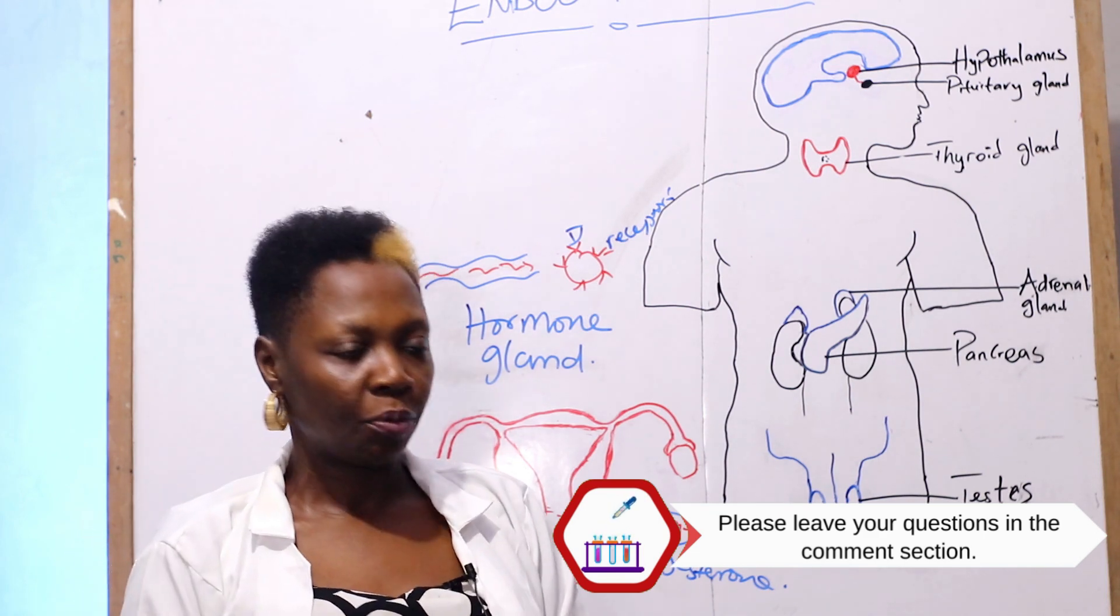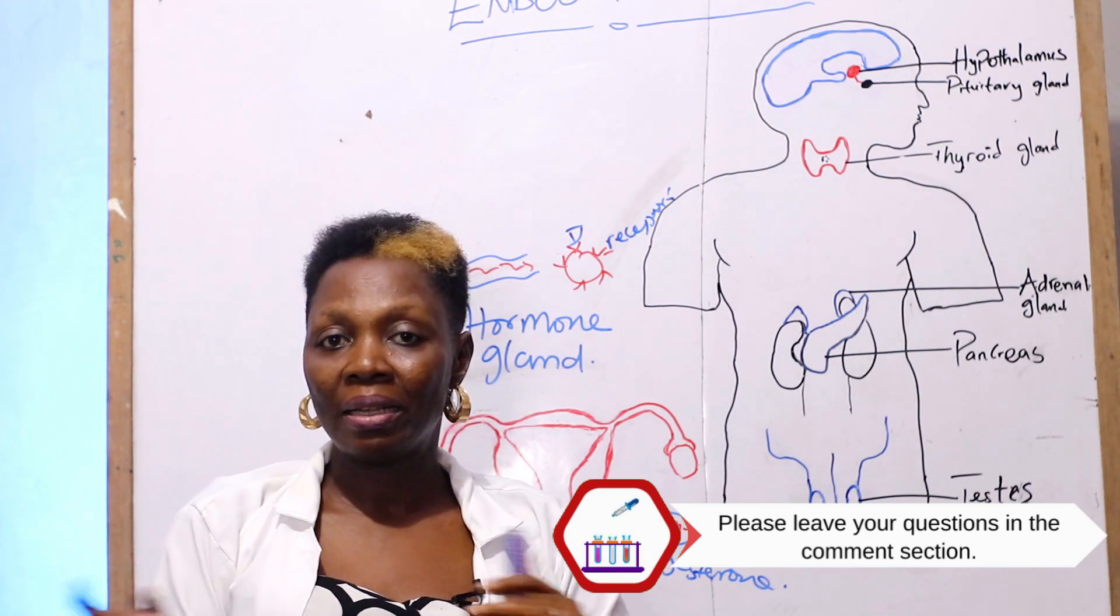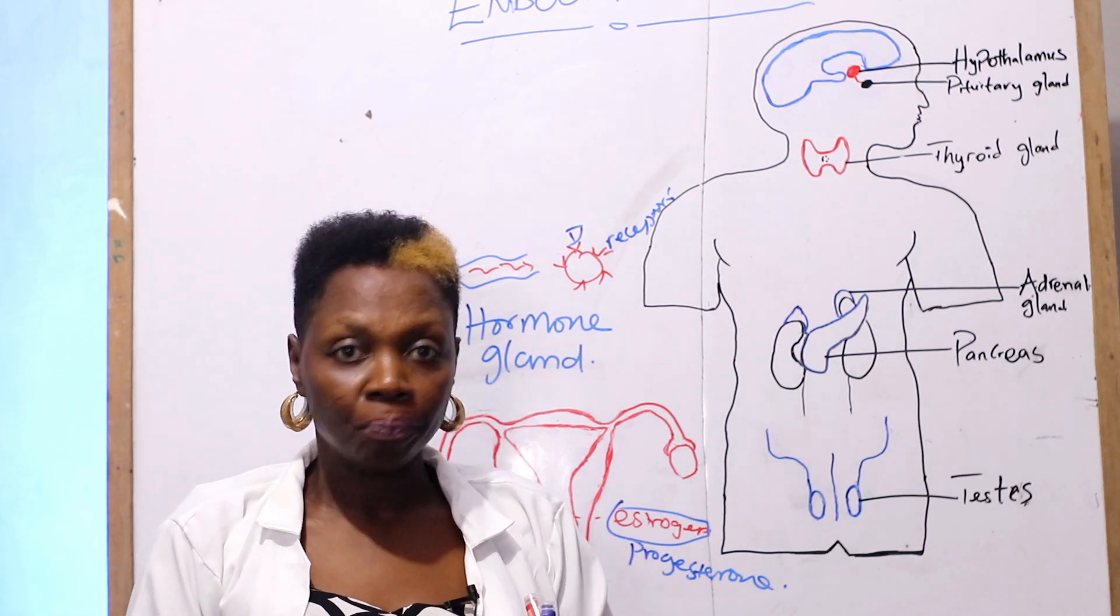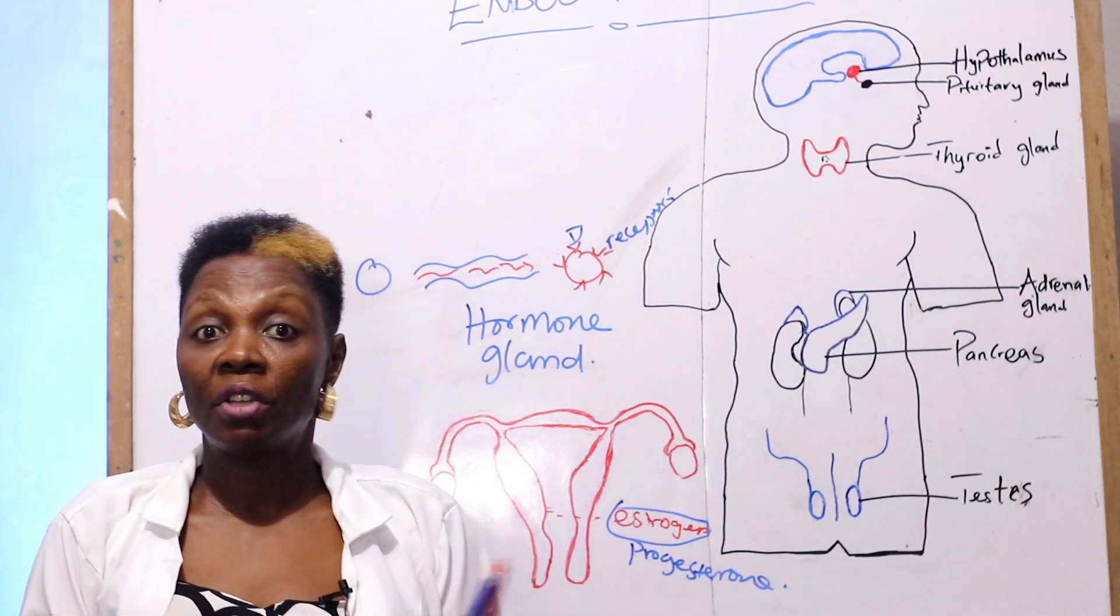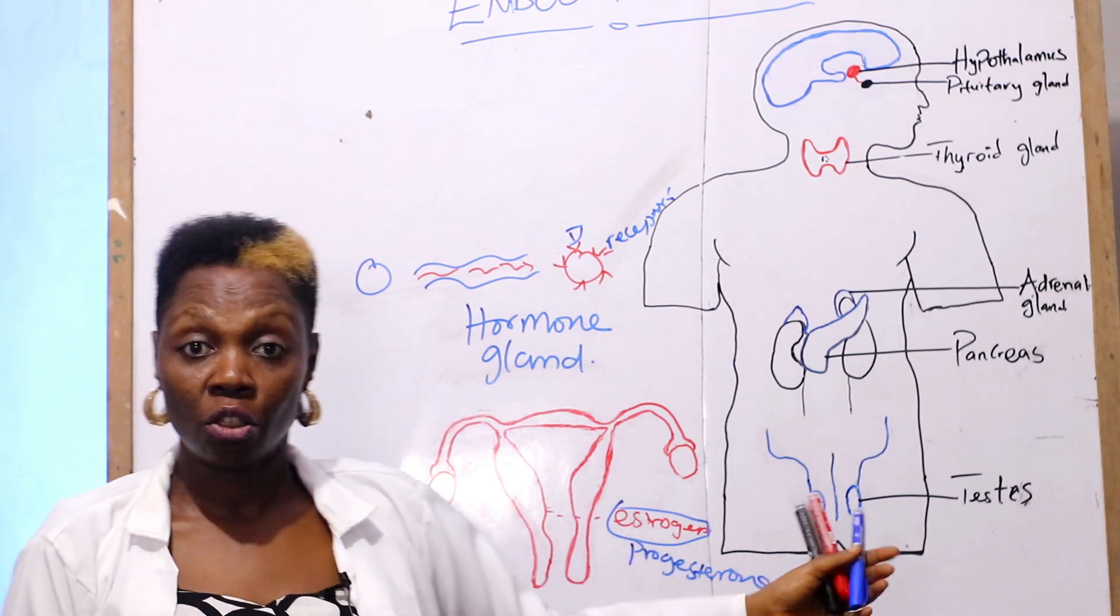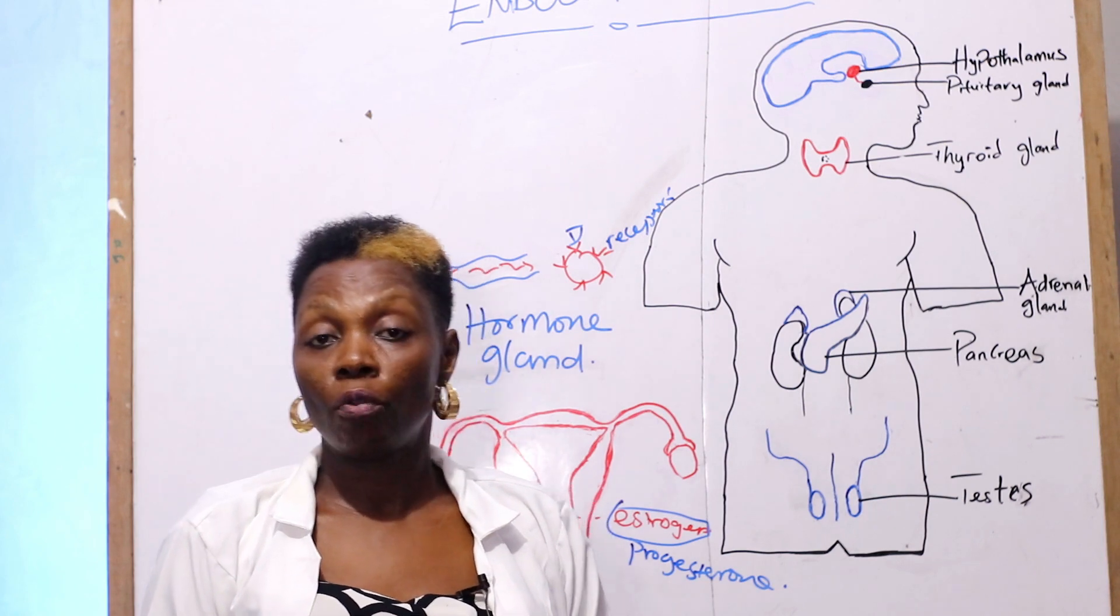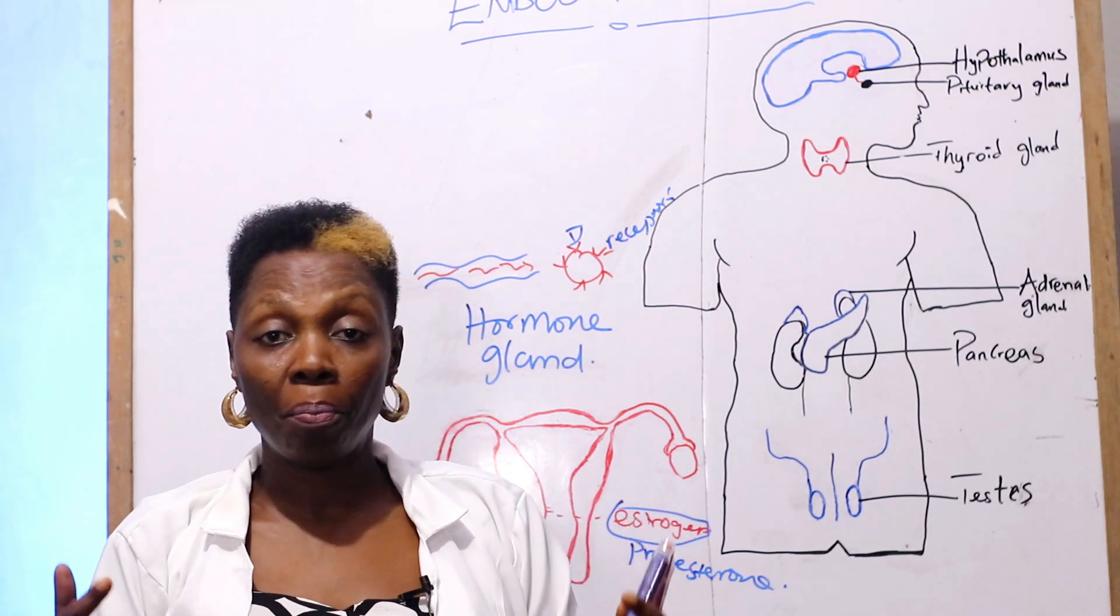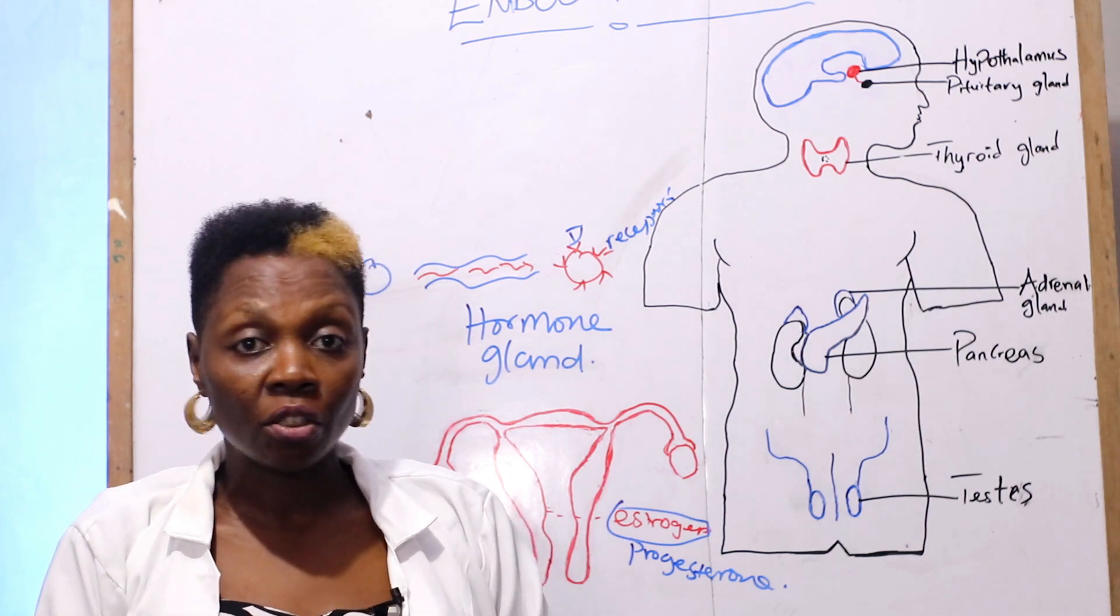Now, you must understand this before we leave. The hormones are classified based on their structure, based on their function. For the structure, we have the steroid hormones: progesterone, estrogen, testosterone—they all fall into the class of hormones called steroids. The steroids have a parent compound called cholesterol.